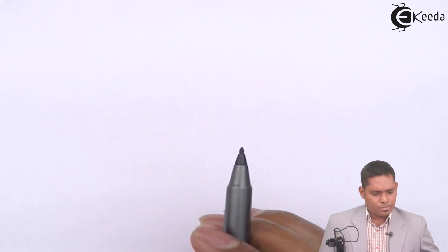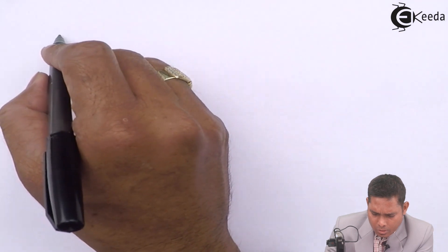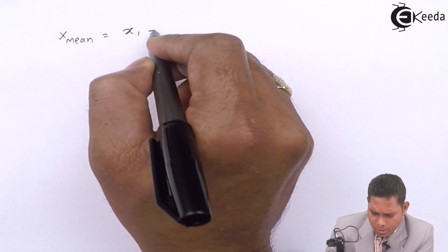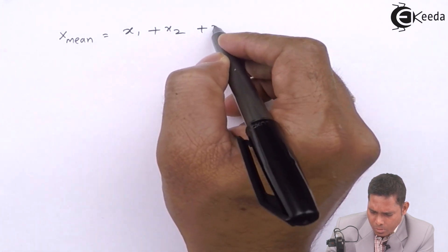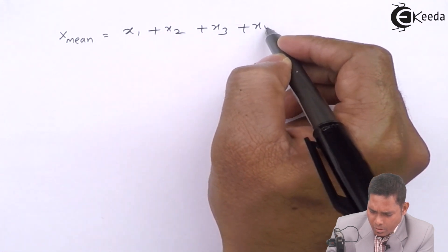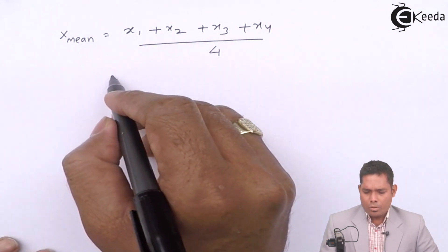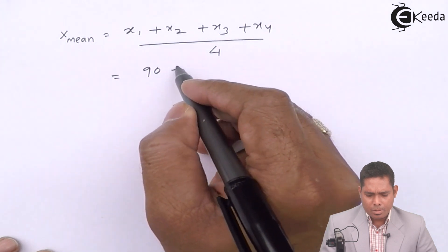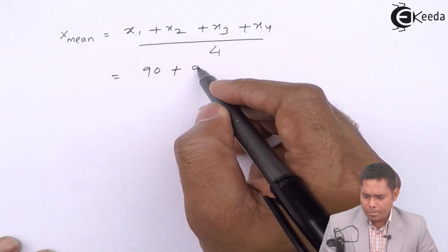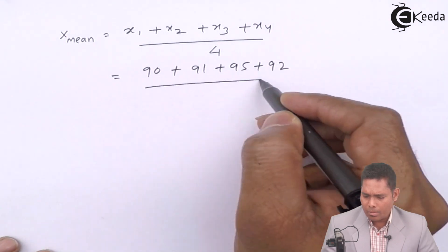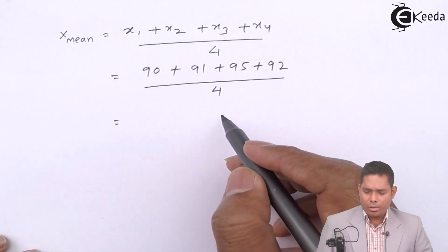That is a true value or mean value. So the mean of this, X mean, there are four readings, X1, X2, X3, X4. You have by 4. That is 90 seconds plus 91, 95, and 92 seconds divided by 4.